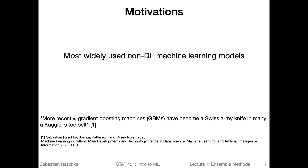So again, why do we care about ensemble methods? Based on my knowledge, ensemble-based methods like random forests and gradient boosting are among the most widely used non-deep-learning machine learning models. In deep learning, many people also try ensemble methods on Kaggle, but it's more complicated because you have to worry about model convergence, and deep learning is also very expensive computationally.